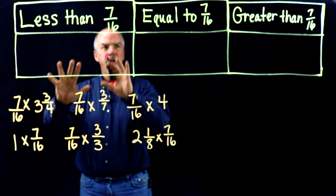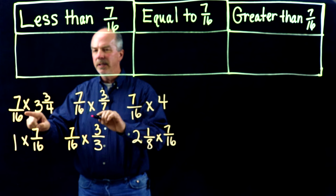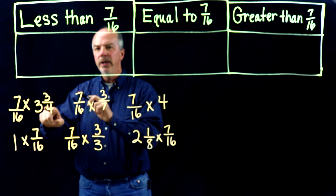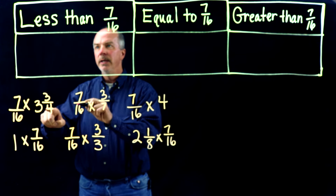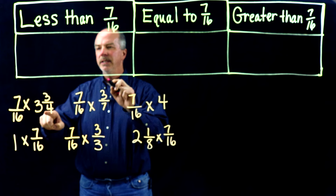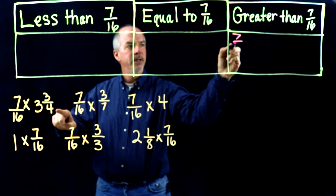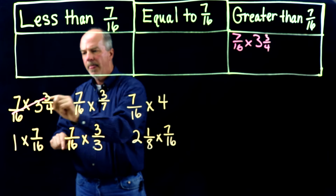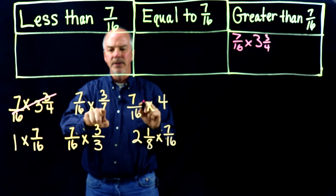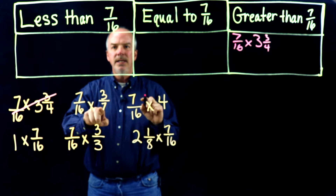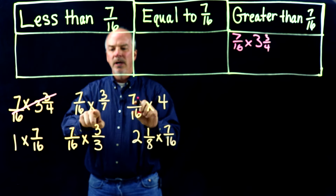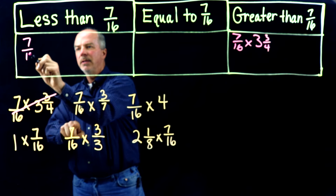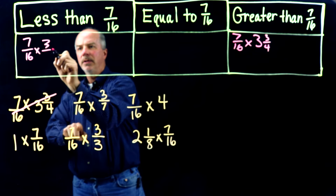Let's look at these. 7 sixteenths times 3 and 3 fourths — we're comparing to the factor 7 sixteenths. Well, 3 and 3 fourths is greater than 1, so 7 sixteenths times 3 and 3 fourths: the product will be greater than 7 sixteenths. Now 7 sixteenths times 3 sevenths — 3 sevenths is less than 1, so our product will be less than what we started with. So 7 sixteenths times 3 sevenths goes in the 'less than' category.